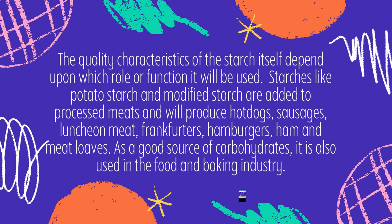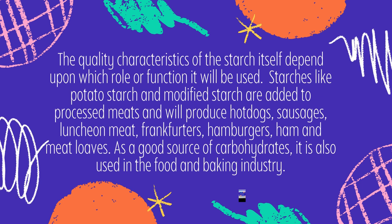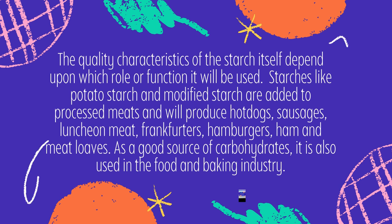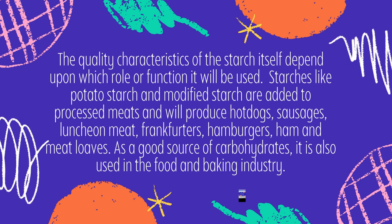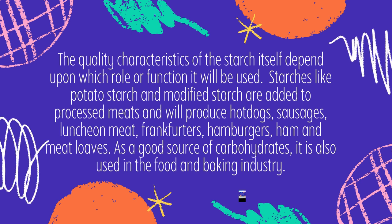The quality characteristics of starch depend upon which role or function it will be used for. Starches like potato starch and modified starch are added to processed meats to produce hot dogs, sausages, luncheon meats, frankfurters, hamburgers, ham, and meatloaf.